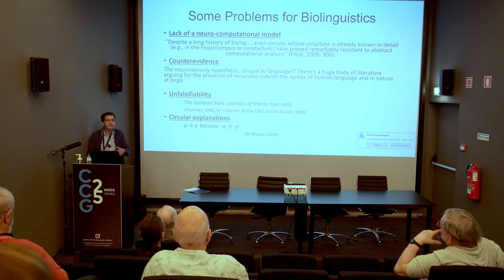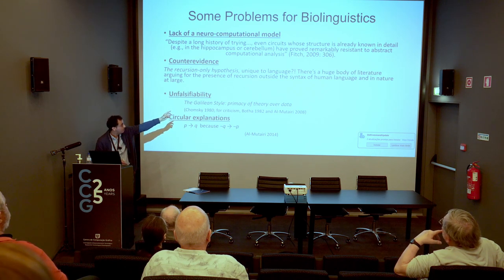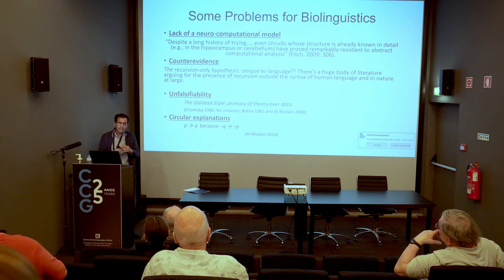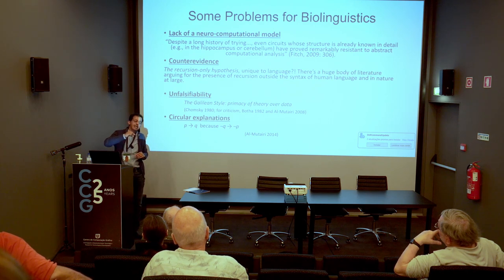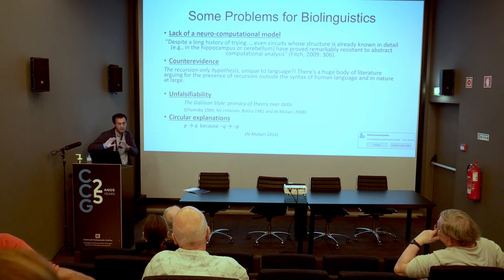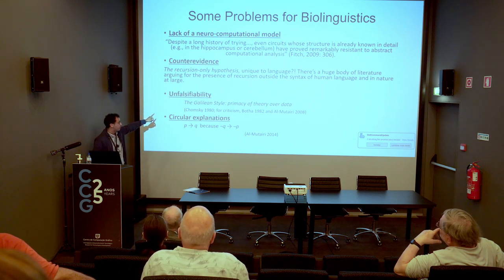Also, we have a problem of counter-evidence for the recursion-only hypothesis being unique to language. If you look at the literature, recursion is everywhere — there is a huge body of literature arguing for the presence of recursion outside the syntax of human language and in nature at large. When Chomsky responded, he suggested maybe the genetic instruction to use recursion is what's genetically encoded, but this is really a way of not responding to the real question.